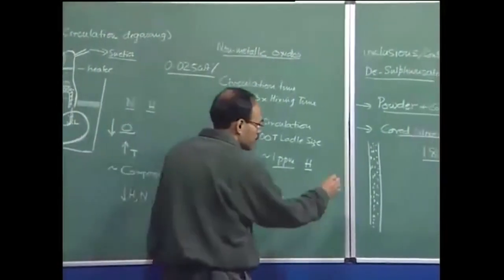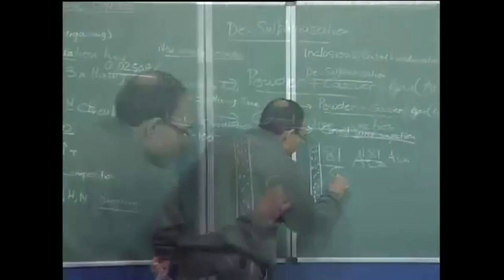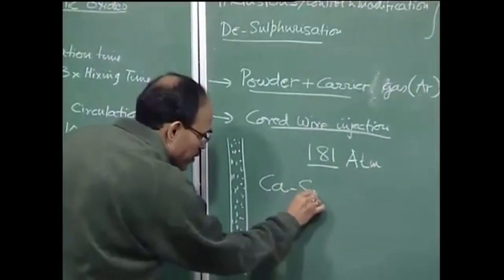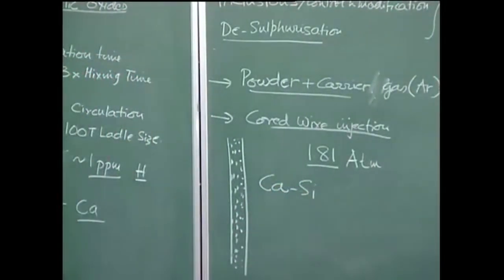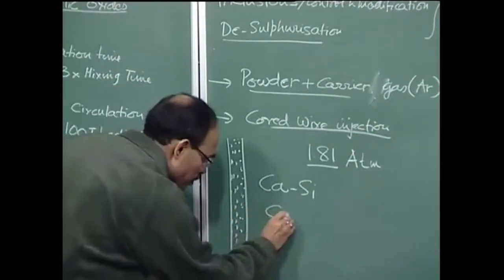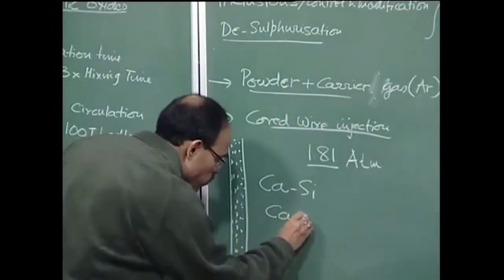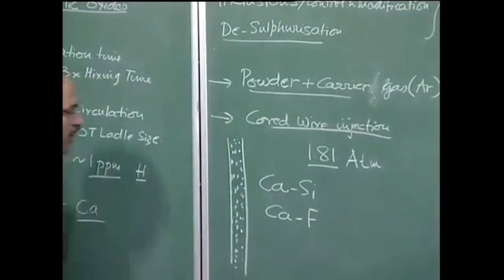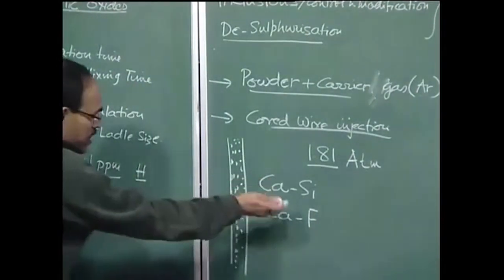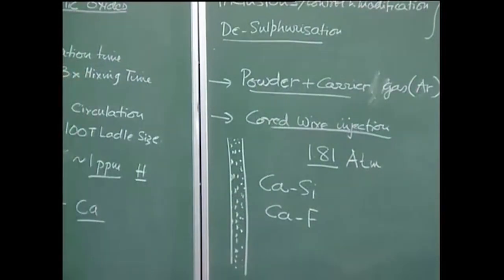Calcium can be injected as calcium silicide or calcium chloride powder — not in pure form — via cored wire or pneumatic powder injection.